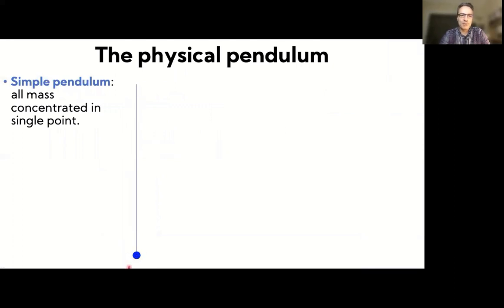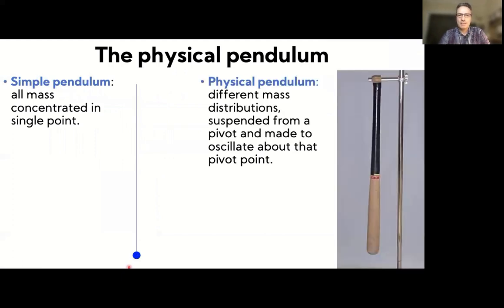A simple pendulum has all the mass essentially concentrated — like a book on a long massless string. The physical pendula we'll discuss in this lesson have different, fairly arbitrary mass distributions. They are suspended from a pivot point — in this case the end of a baseball bat. We start oscillations by slightly nudging it and letting it oscillate from that pivot point.